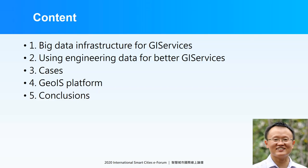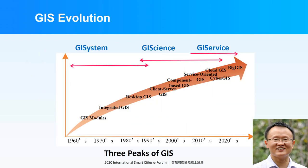We can say that there are three peaks of GIS, which is the GIS system, GIS science, and GIS service. As traditionally, we focus more on the software system, and then we have scientific analytic methods in GIS. Now we have more wide application, and we need to provide better service for application.